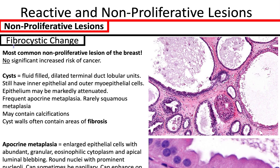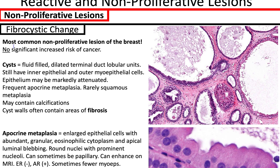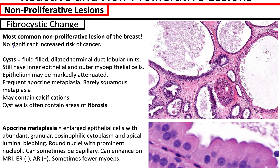Fibrocystic changes is the most common non-proliferative lesion of the breast with no significant increased risk of cancer. The most common findings are cysts in the terminal duct lobular units, thought to arise from blockage in the ducts upstream. You'll still have an inner epithelial and outer myoepithelial layer, although the epithelial layer can look flattened if the cyst is really dilated.